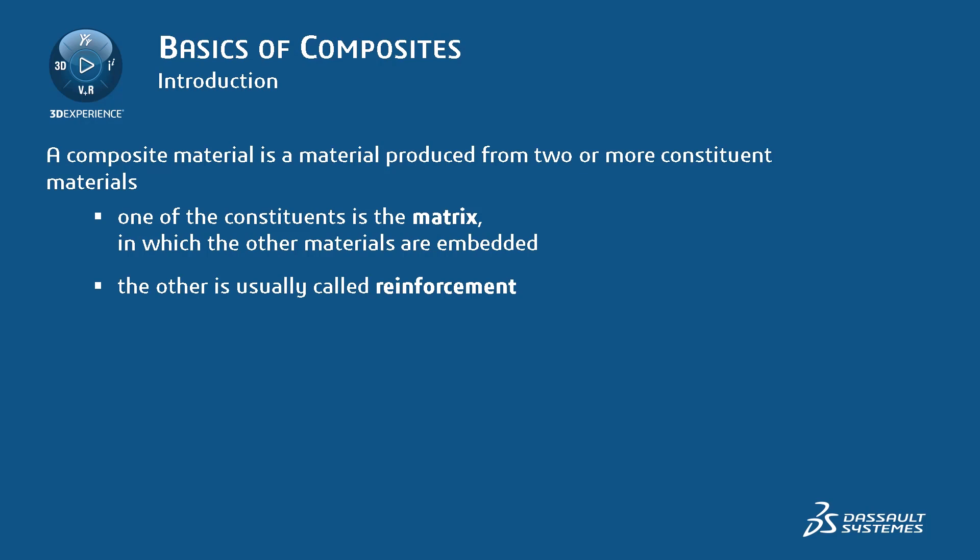It can consist of two or more distinct and mechanically separable components. It can include metals, plastics, minerals, and wood. Different materials can be combined in a variety of ways, and the resulting material combines the properties of each constituent in an optimum fashion. In the context of CATIA composites, we typically are referring to fiber-reinforced materials — a material consisting of a reinforcing fiber such as glass or carbon, which provides the majority of the strength and stiffness, and a matrix that holds the fibers together, like a glue.